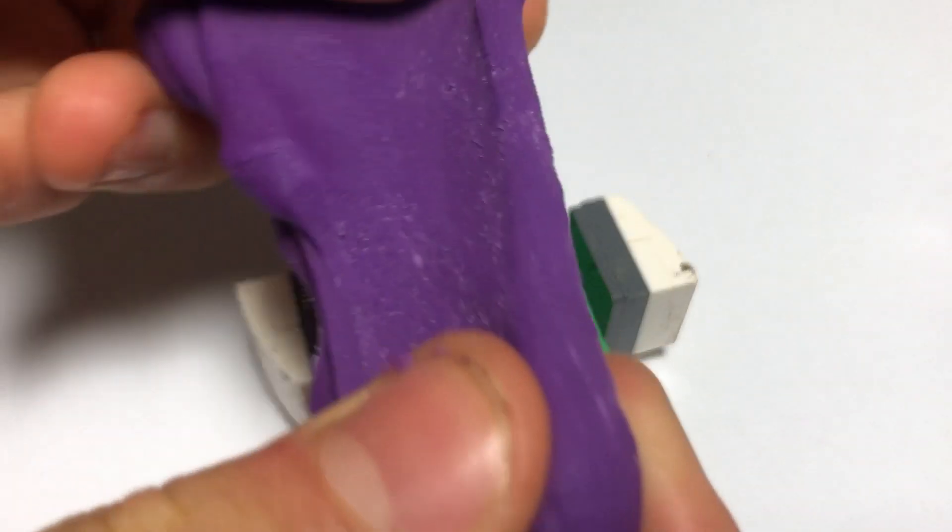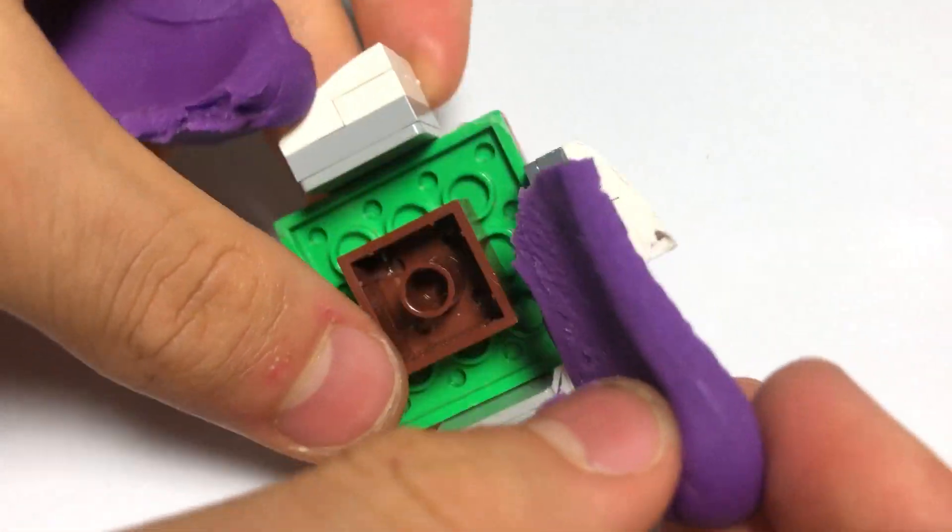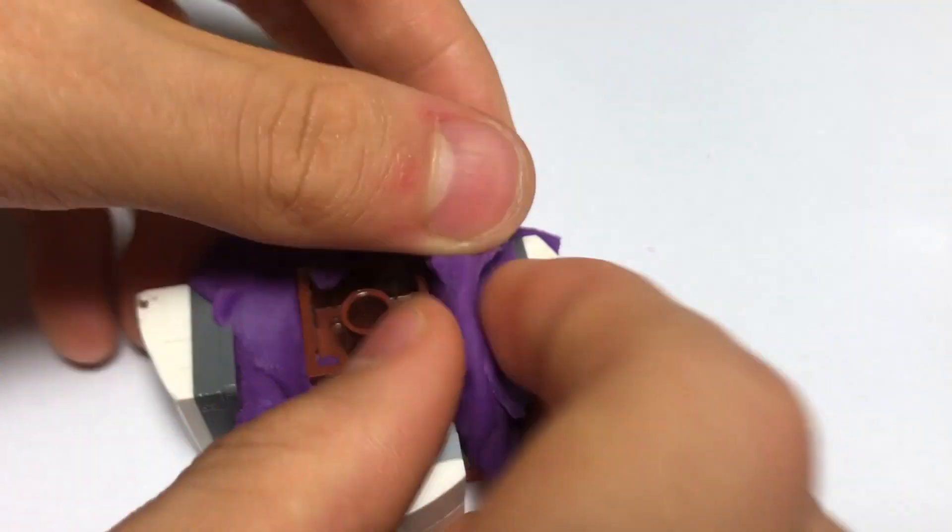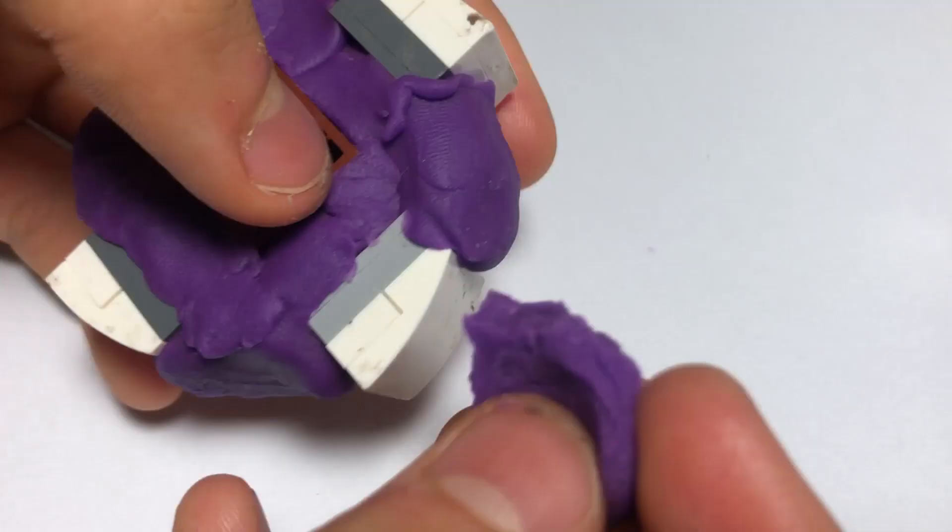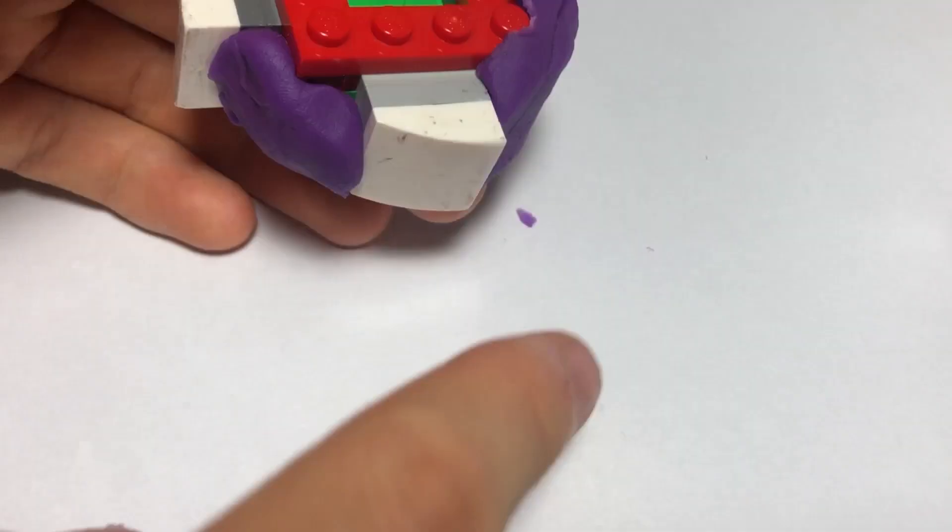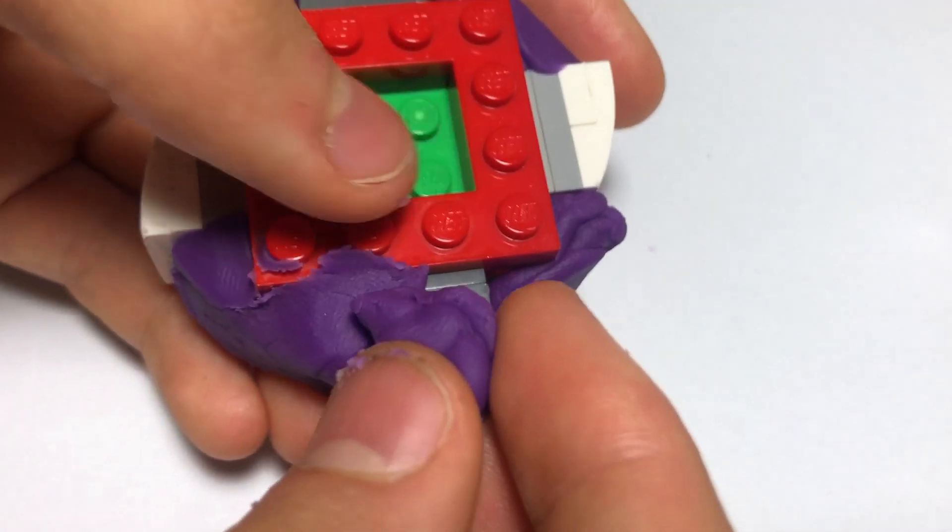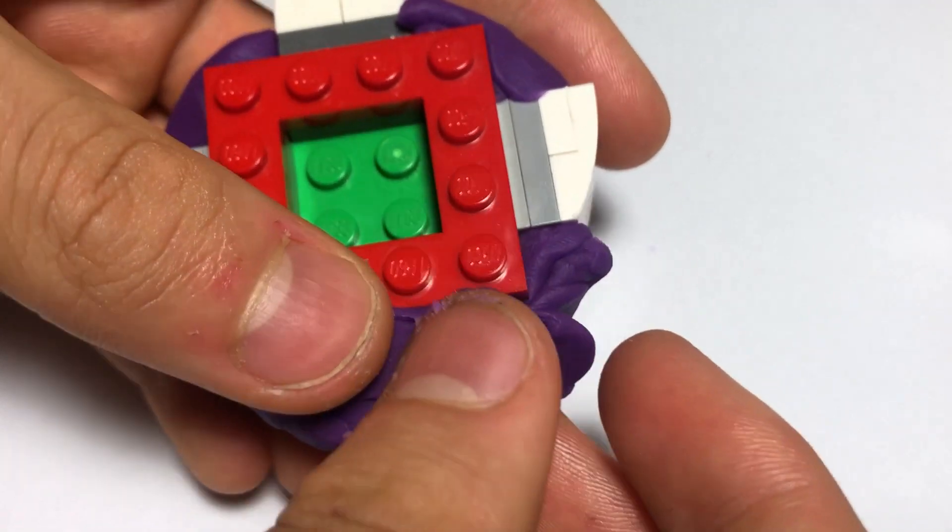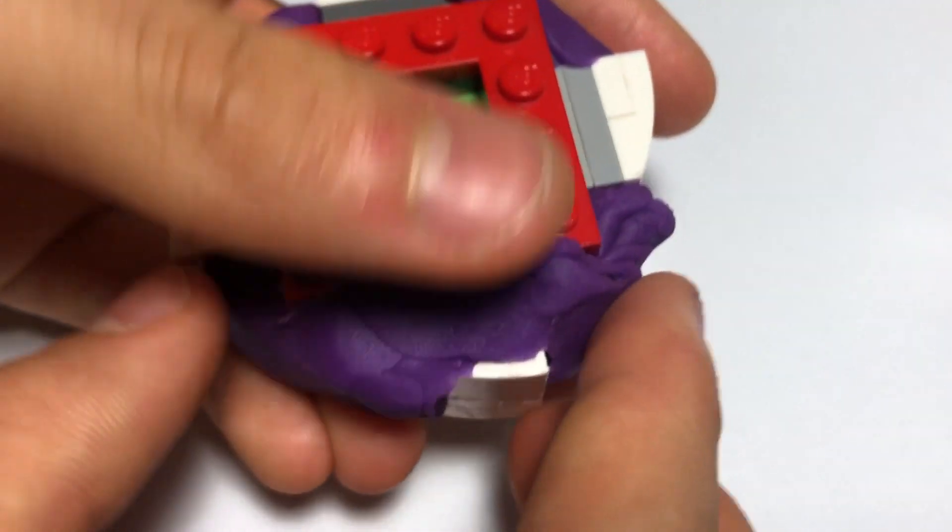So taking this Play-Doh and spreading it along here, and then connecting it through the top on some of the wings like this to ensure greater stability.